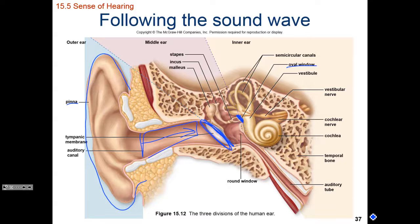The bone sitting directly over the oval window is known as the stapes. Traveling from the outside of the ear to the tympanic membrane, the first auditory ossicle is the malleus, then the incus, then the stapes. The malleus, incus, and stapes are the three smallest bones in the human body.